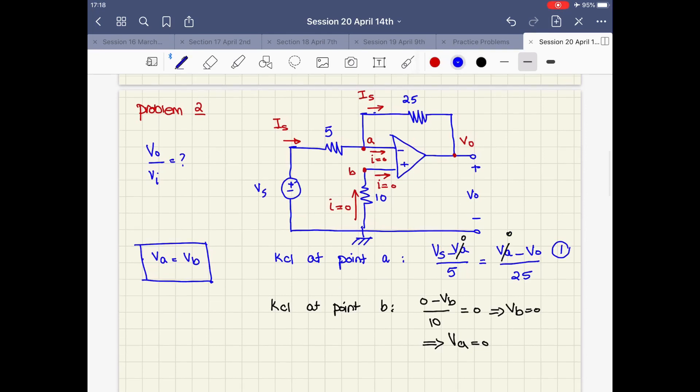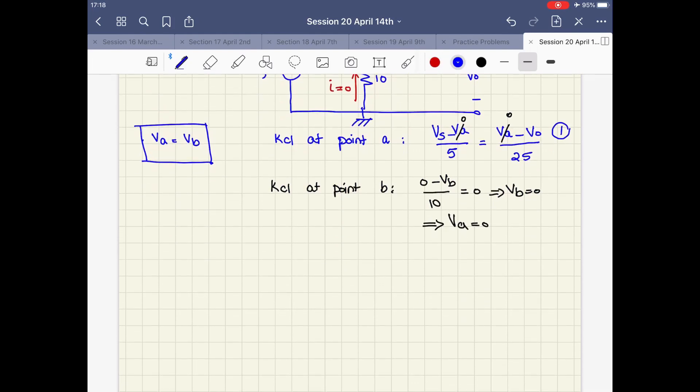So equation one becomes vs over five equals negative vo over 25. What I need to find is vo over vs, which is going to be 25 over negative five. That is negative five as the gain of this op-amp.